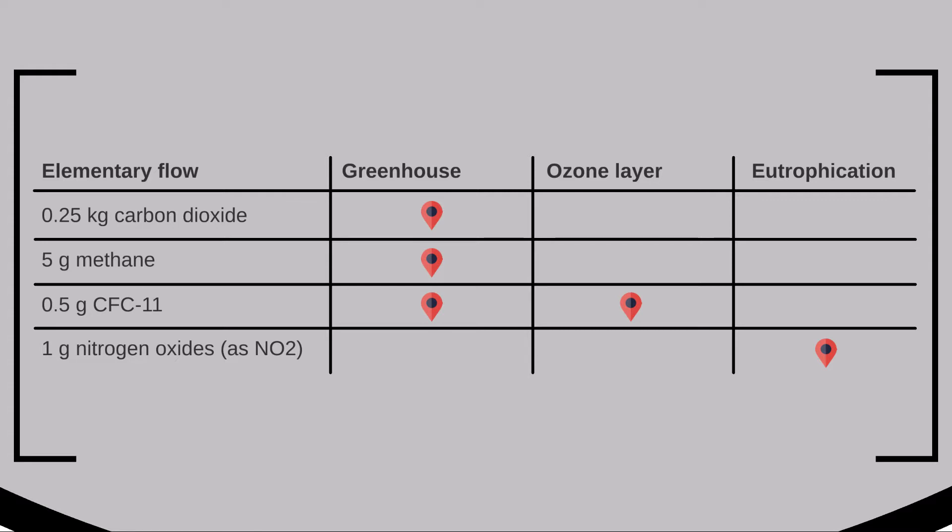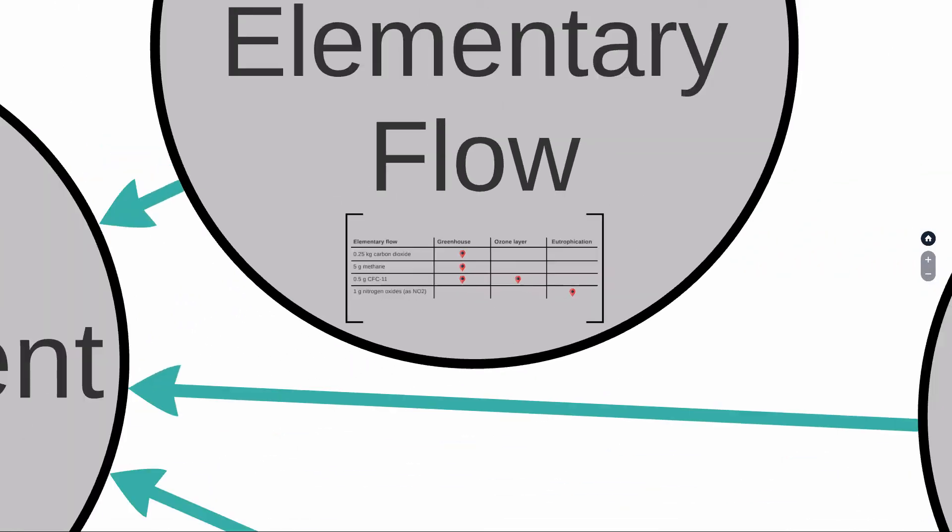In practice, product systems will have several of these elementary flows, maybe even in the hundreds, depending on the nature of the product system and LCA scope in question.